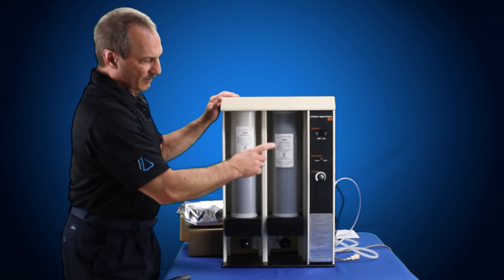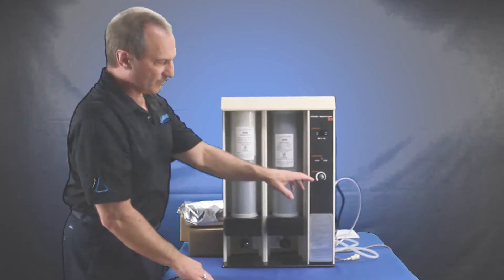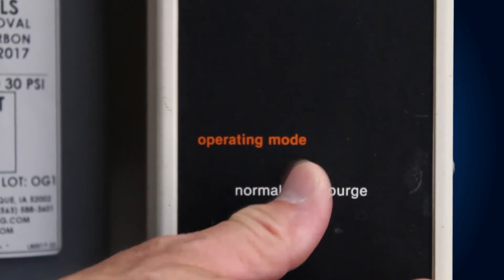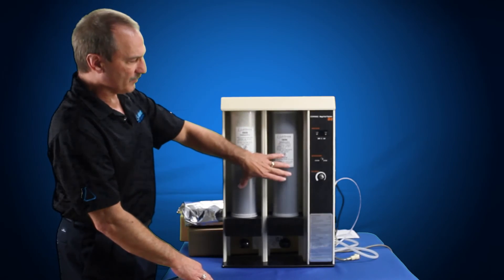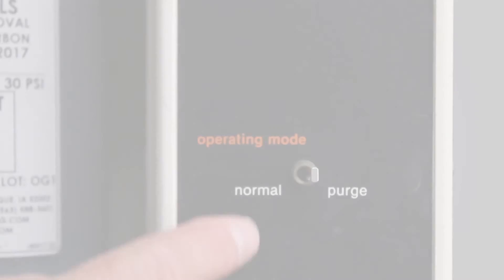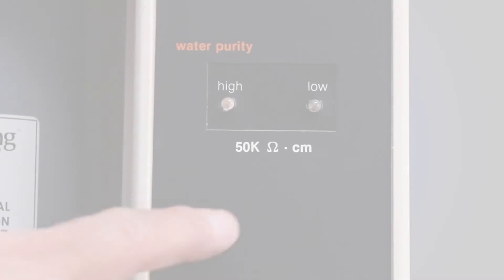Then you're going to turn on, plug the system into the outlet, turn on your water source, plug it into the water source, turn it on. And then you're going to want to hit the purge button because you want to flush water through this for about the first 10 or 15 minutes. Then you can pull this button back to normal. And then your gauge is up here.